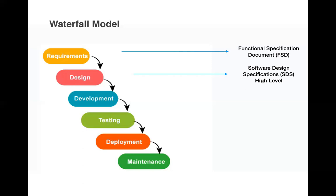Then starts the development phase. Taking the functional specification document and high-level software design specification as reference, developers start the actual implementation of the processes. Along with development, they also prepare a low-level software design specification document, which describes the code at a detailed level — what was implemented and the detailed implementation steps.